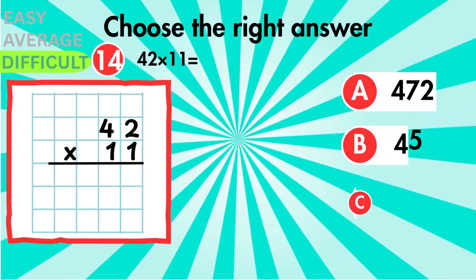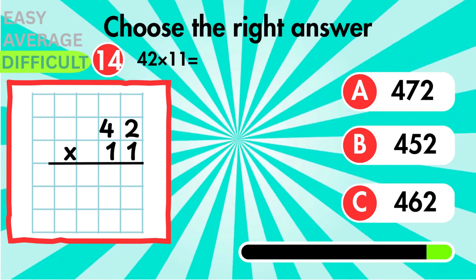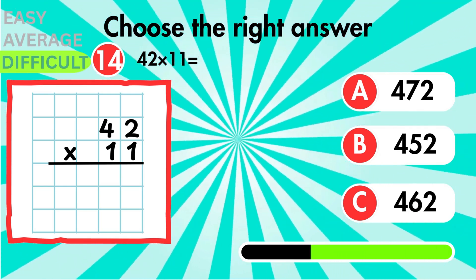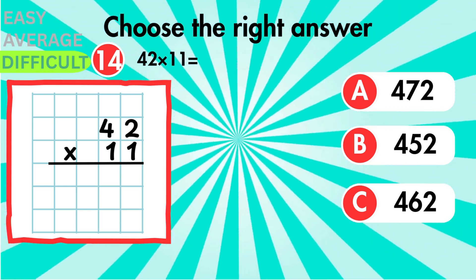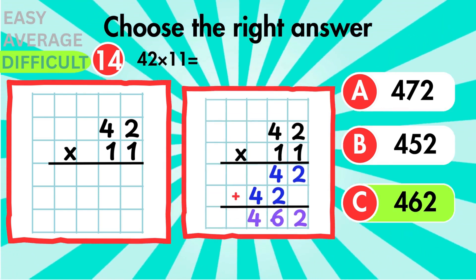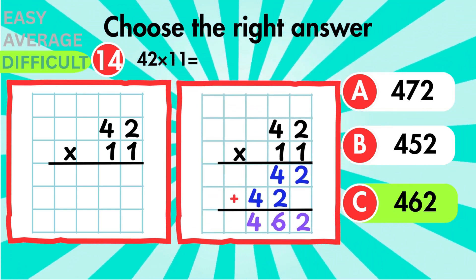We have 42 times 11. This is a large multiplication without regrouping here. The final answer is 462.